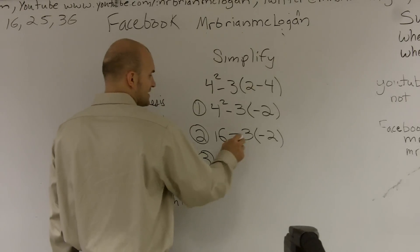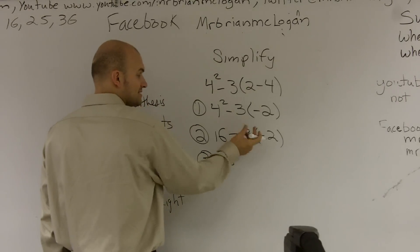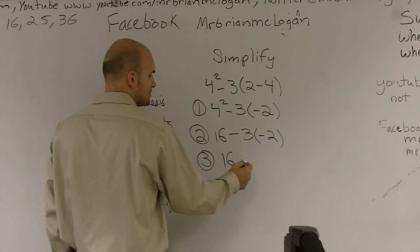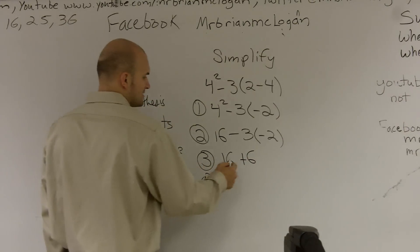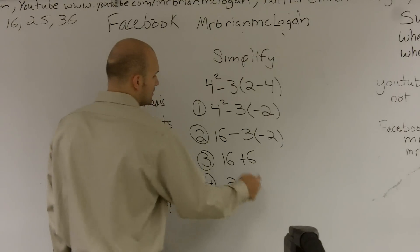So it would be 16 and then negative 3, since that's a minus 3, it's a negative, negative 3 times a negative 2, it's going to give me a positive 6. And then last step, it's fairly easy to just add, 16 plus 6 is going to give me 22.